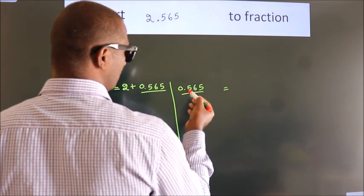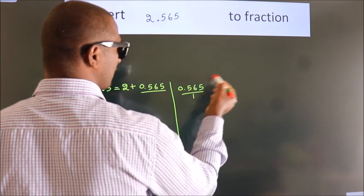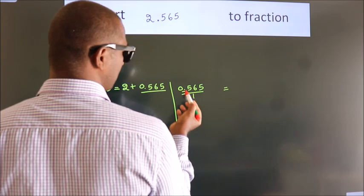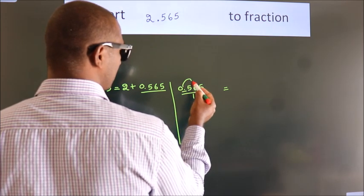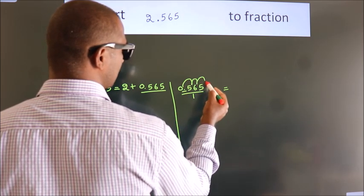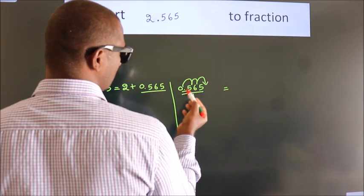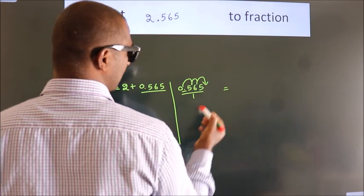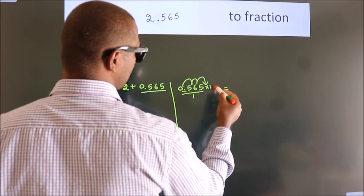To convert this to fraction, we have to move this decimal after 1, 2, 3 numbers. To move this decimal after 3 numbers, we have to multiply it with 1000.